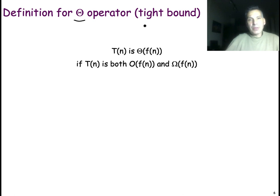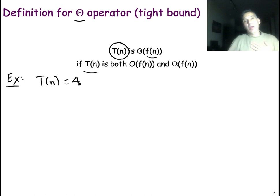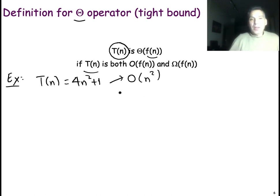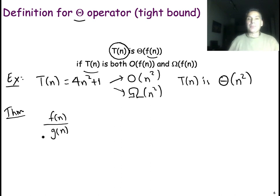The third operator is the big theta, which is used to have a tight bound for the running time — both an upper bound and a lower bound at the same time. The definition is that t of n is big theta of some function f of n when t of n is both big O of f of n and big omega of f of n. For example, if t of n is 4n squared plus 1, this is both big O of n squared and big omega of n squared, which means that t of n is also big theta of n squared.